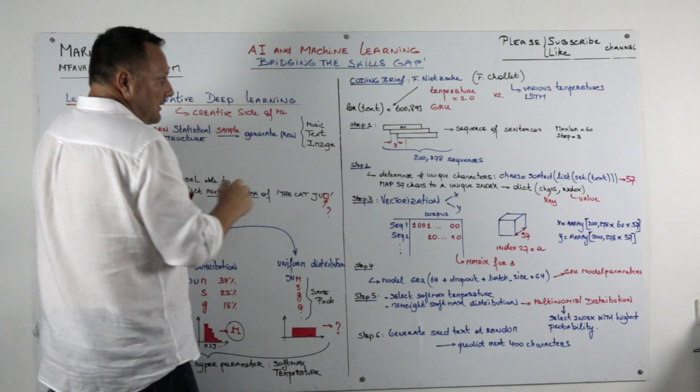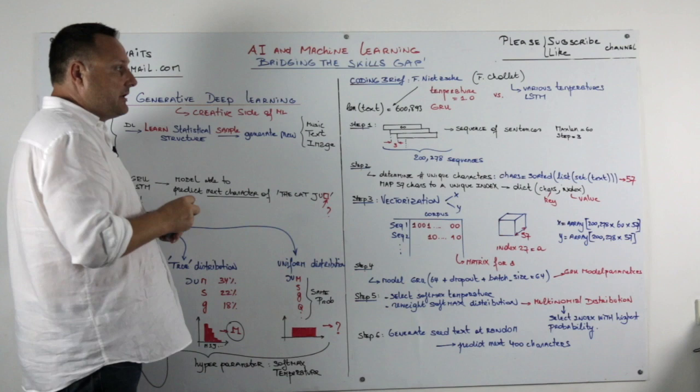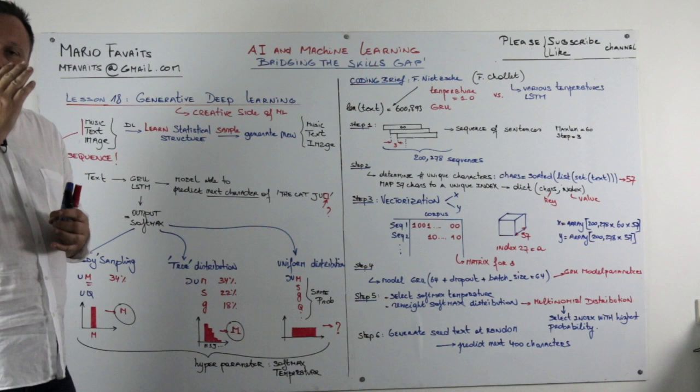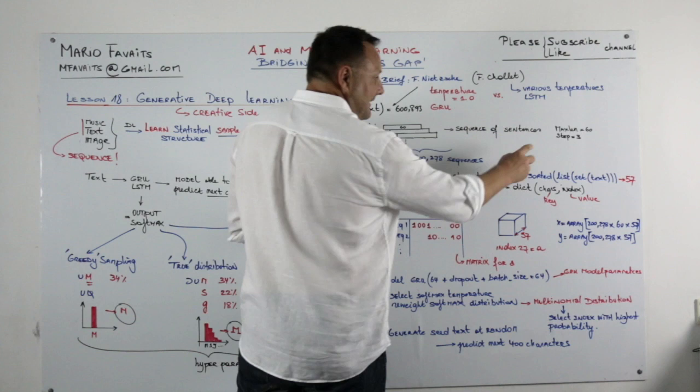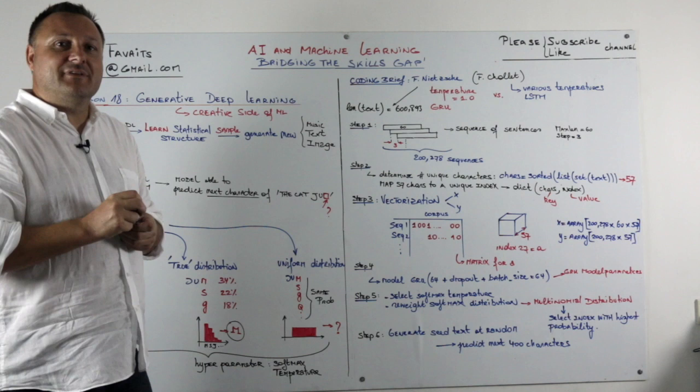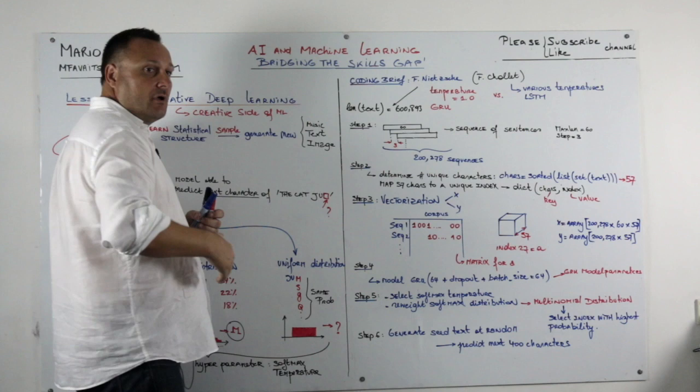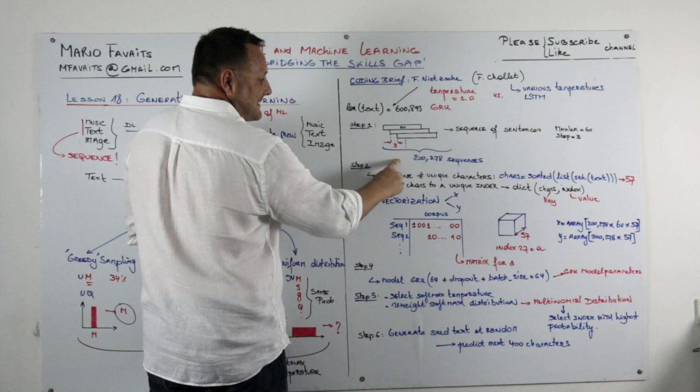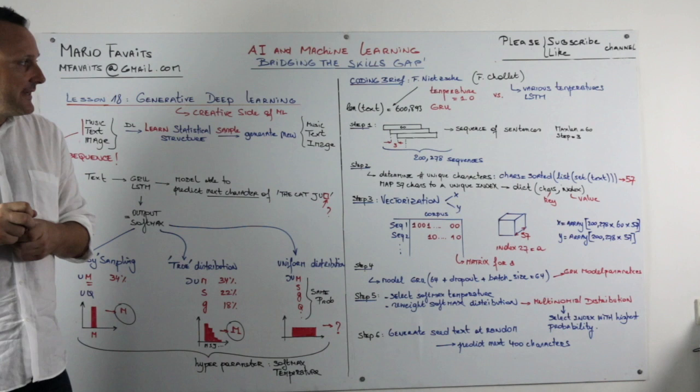The length of that text in terms of number of characters is about 600,000. So the first step that we will do is we will cut that text into sentences of a length of 60 characters, and we have 3 characters that don't overlap. So there is going to be a big overlap except for 3 characters. If we divide this by 60, we know that we are going to have roughly 200,000 sentences or sequences.